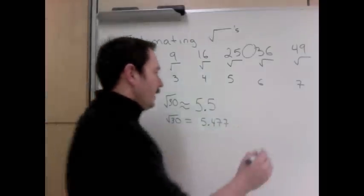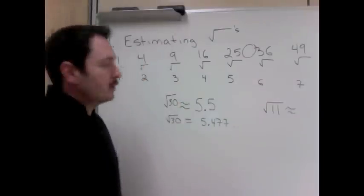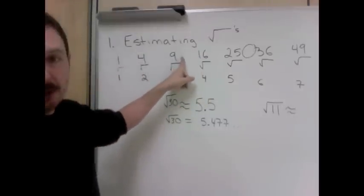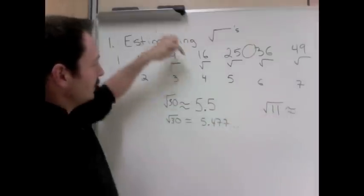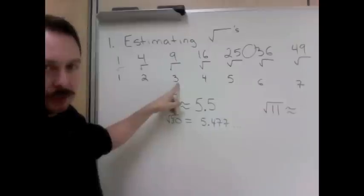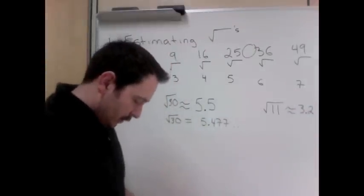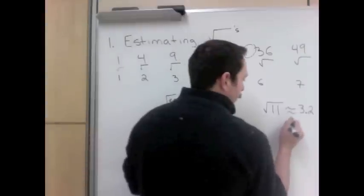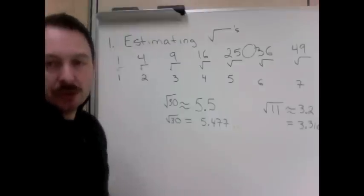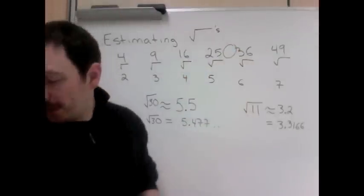Now let's look at another one. What would be the square root of 11, approximately? Well, the square root of 11, let's look for 11. It's between 9 and 16, so I know my answer is going to be between 3 and 4. And 11 is closer to 9 than 16, so the square root will be closer to 3 than 4. So I'm going to guess it's about 3.2. Let's see what it really is. Square root of 11 is actually 3.3166 and it continues on. So to estimate square roots, take your perfect squares and find out what you're closest to.